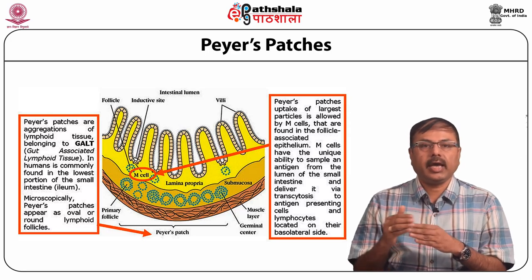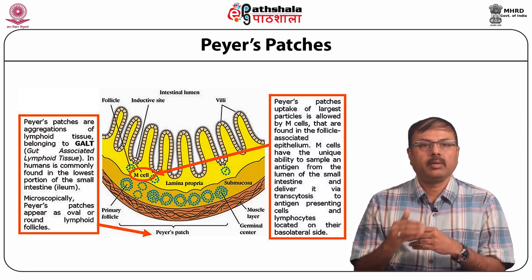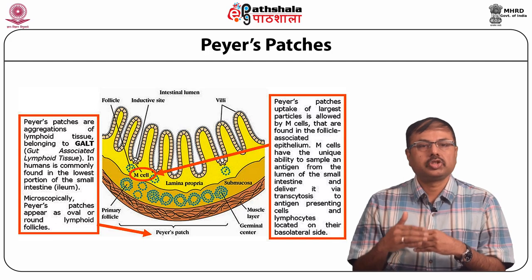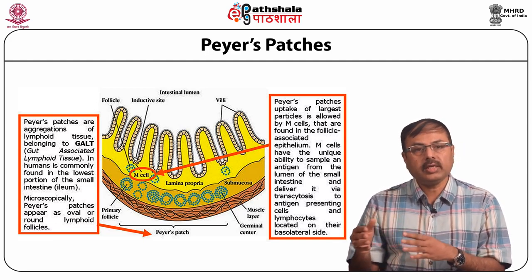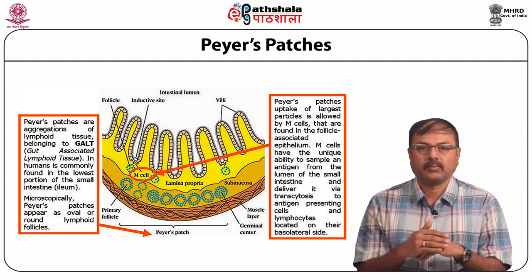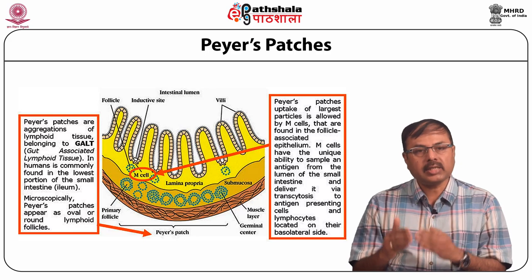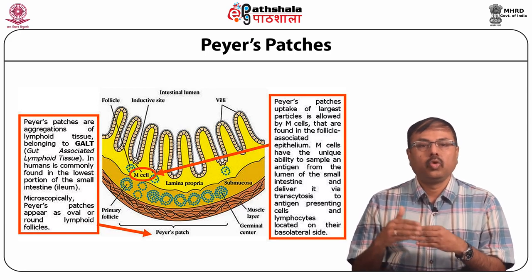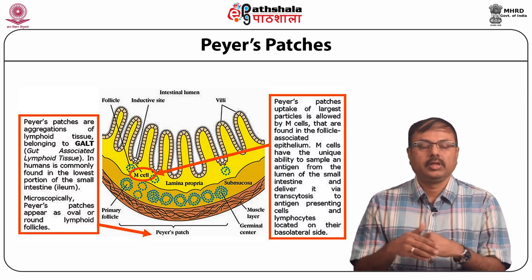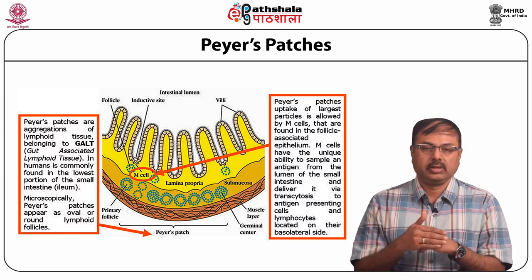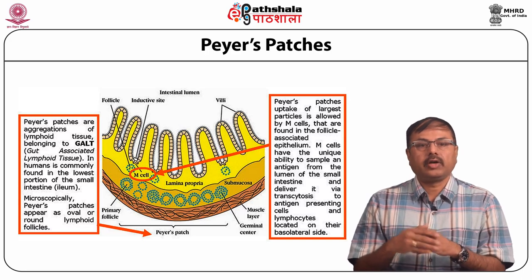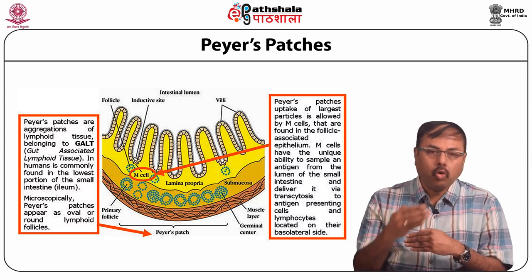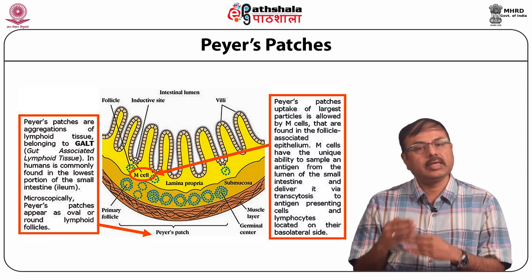Cell precursors and memory cells are stimulated by antigen in Peyer's patches. Cells pass to the mesenteric lymph nodes where the immune response is amplified. Activated lymphocytes pass into the bloodstream via the thoracic duct, then home in on the gut and carry out their final effector functions. HEVs are not present in Peyer's patches and the mechanism by which cells home in on mucosal sites is unknown.